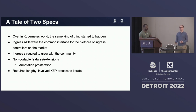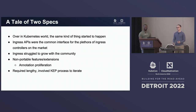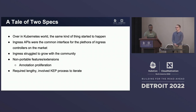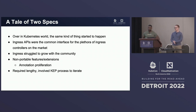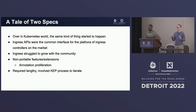What started to happen was implementations added all sorts of annotations — I think Nginx has over 100 different annotations you can add. Or they would make their own completely different APIs, like the Istio gateway resource. We saw the same pattern over and over: not extensible, not portable, a mess in the ecosystem.